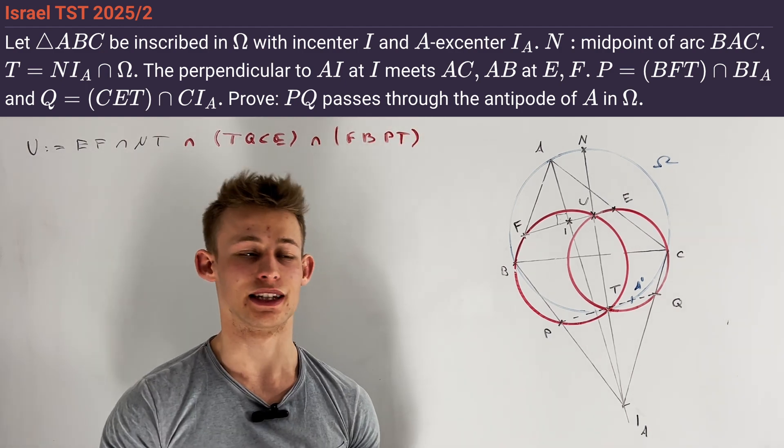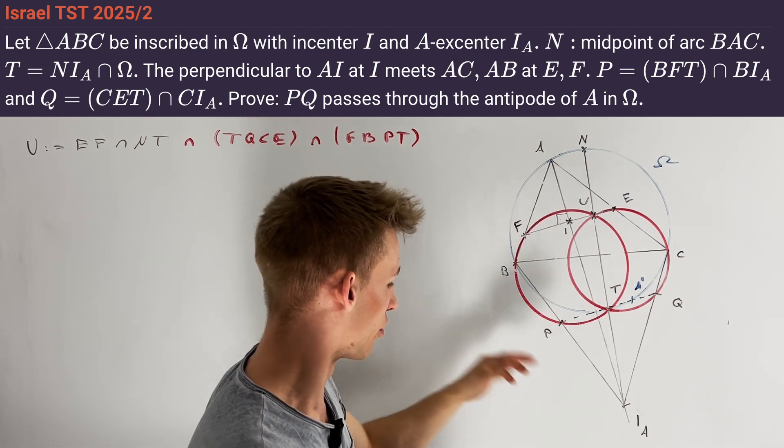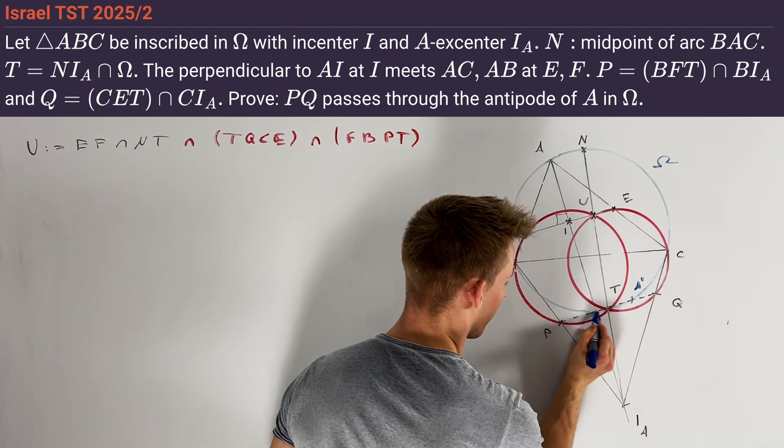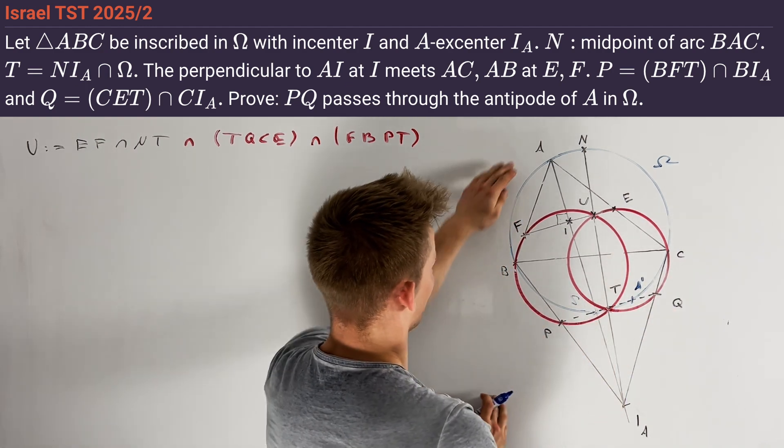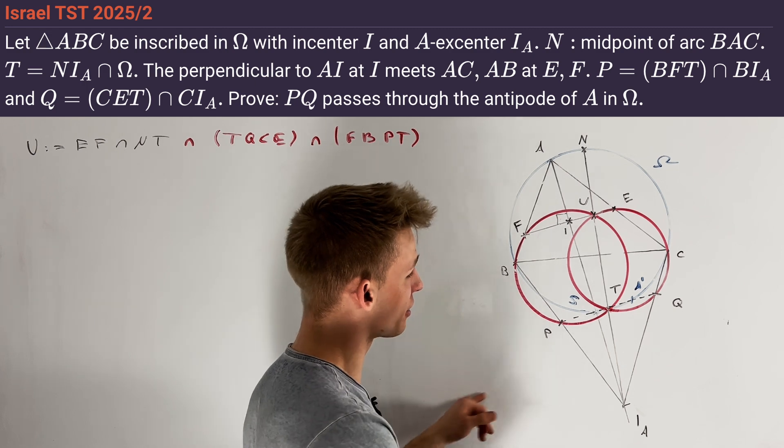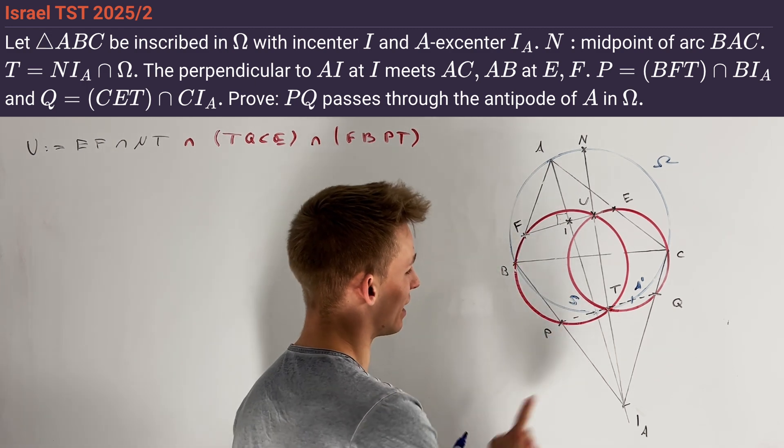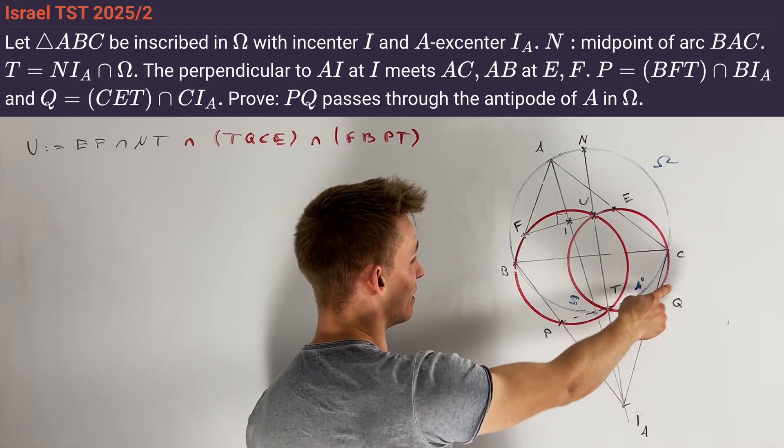One point that we always want to include into our picture when we work with in-centers and/or ex-centers is the point S, which is defined as the midpoint of the arc BC not containing the point A. This is because S lies on the line AI. Moreover, we know that S is the midpoint of the circle through B, I_A, C, and I.